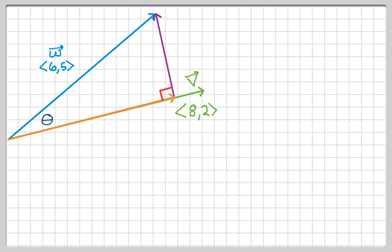So the first thing I'll notice is that I have two vectors, and I know how to find the angle between them, or the cosine of the angle between them. So cosine of θ is going to be w·v over the magnitude of w times the magnitude of v. Alright, so that's one way I can write the cosine of θ.